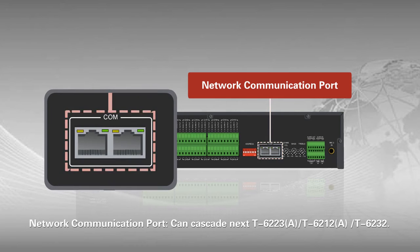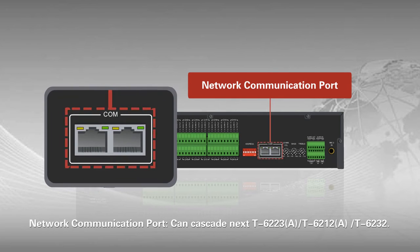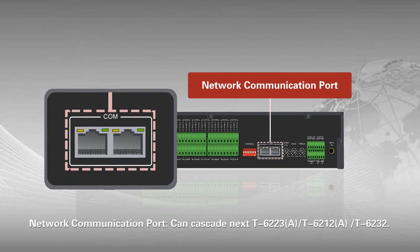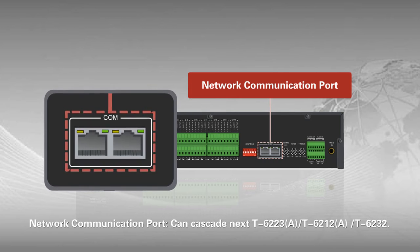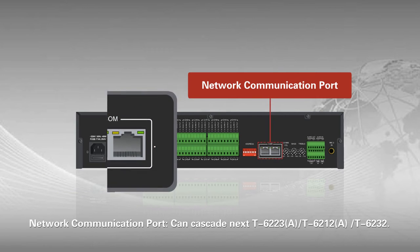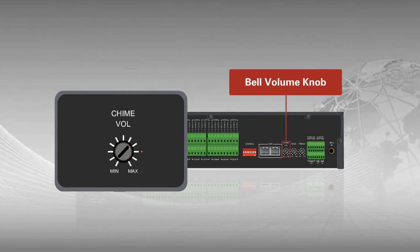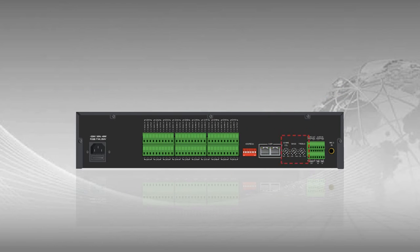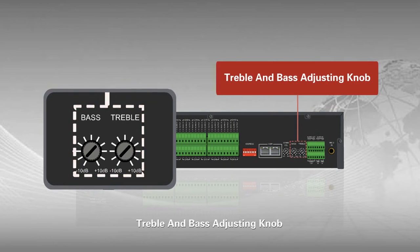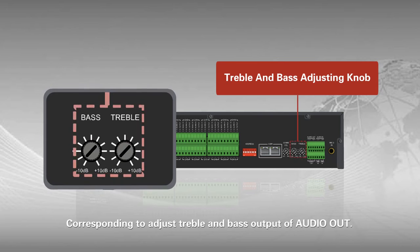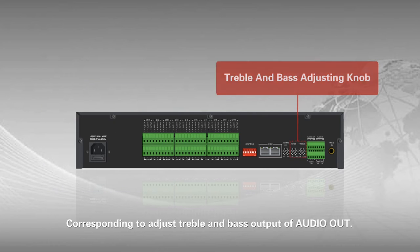Can cascade next to T-6223A, T-6212A, T-6232. Bell audio knob. Treble and bass adjusting knob, corresponding to adjusting treble and bass output of audio out.